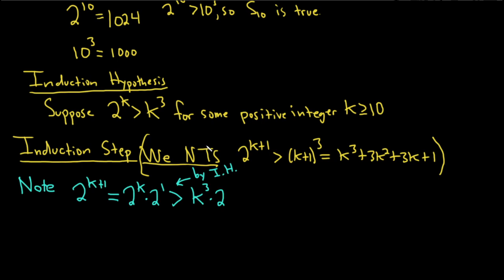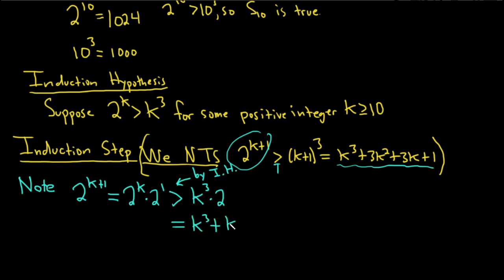So we have 2k cubed. We're trying to show this is greater than (k+1) cubed, which expands to k cubed plus 3k squared plus 3k plus 1. We already have a k cubed here, so let's write 2k cubed as k cubed plus k cubed. We already have the first k cubed, so let's work with the remaining k cubed and try to make it bigger than what's left.